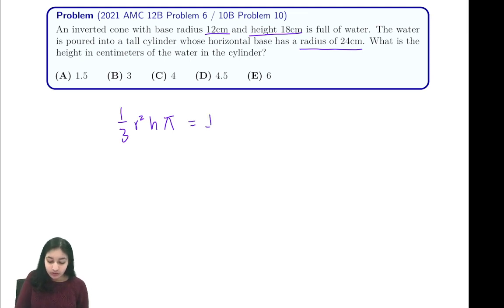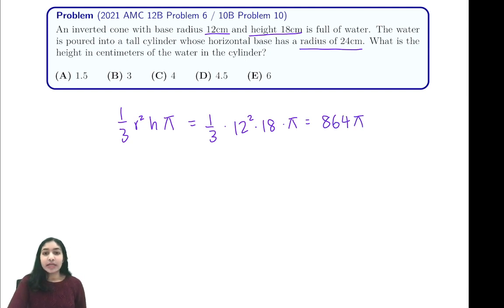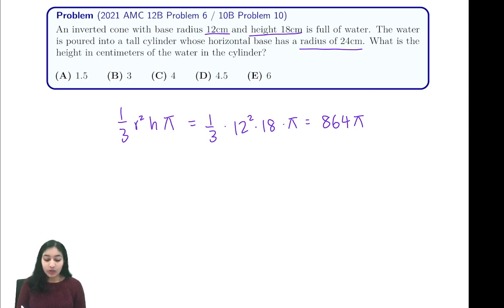That gives us one-third times 12 squared times 18 times π, which evaluates to 864π. Then, whatever our cylinder's height is, we know that the volume of that cylinder is going to be equal to 864π once we pour the water in.